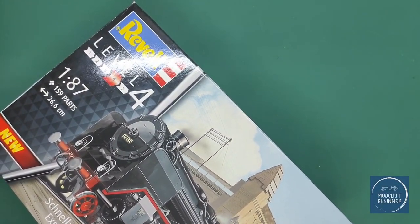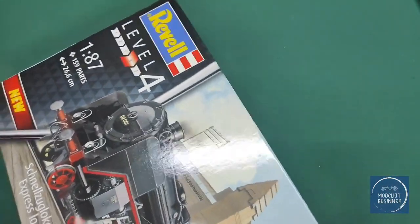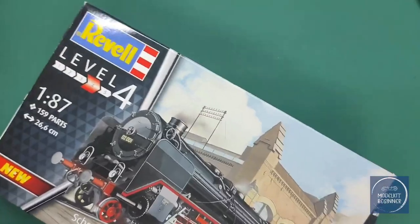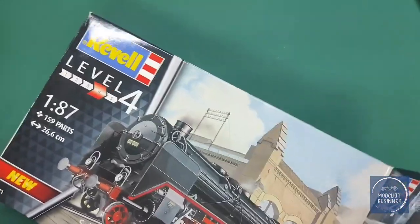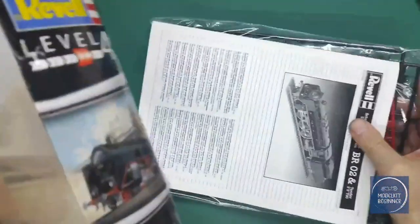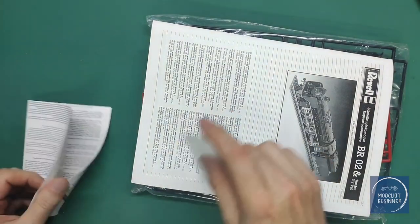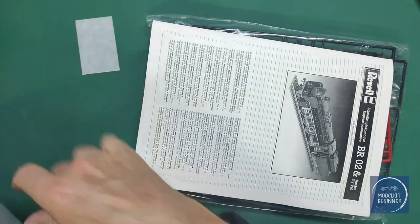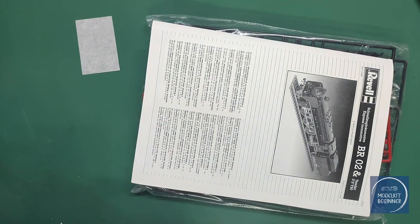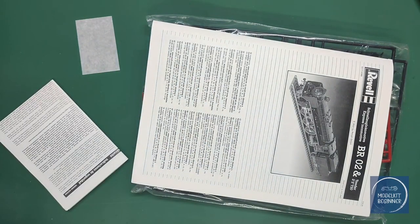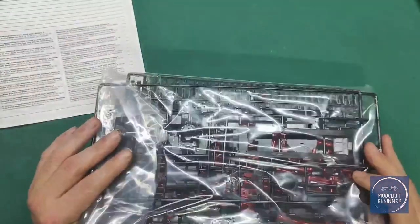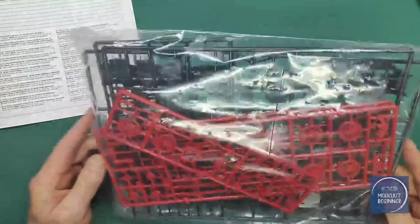Let's take everything out and see what we have. This looks like the cover for the decals, and here they are. Then we have one big bag of parts, no different bags whatsoever.